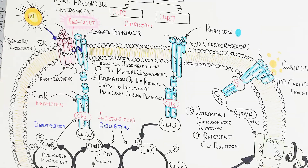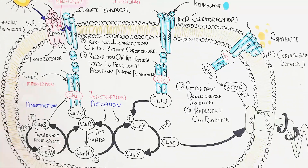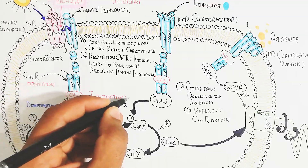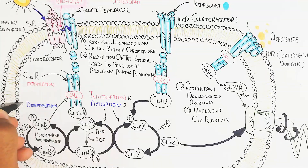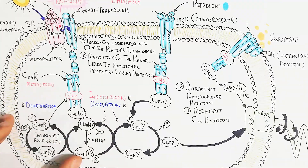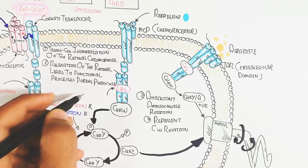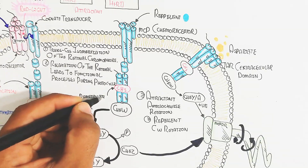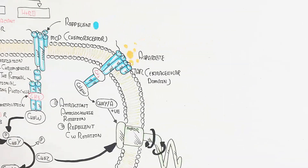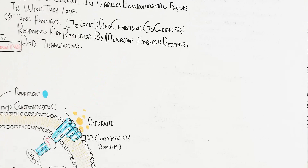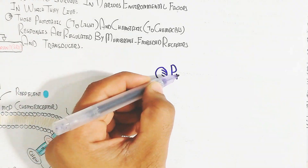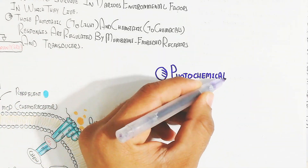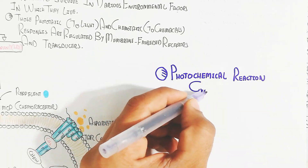In this way, phototaxis and chemotaxis occur in bacteria through a phosphorylation cascade — activation of proteins CheW, CheY, CheA, and others — and ultimately CheZ activates flagellar movement. Now let's understand the photochemical reaction cycle, which describes how light wavelength drives repellent or attractant behavior.